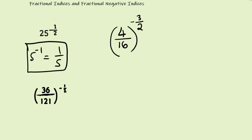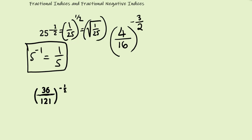Because we have fractional negative indices here, we're going to flip 25 over — so the reciprocal of 25 is 1 over 25 — and write it with a power of one half. Because we flipped the number over, we change the sign of the power to positive. Now we find the square root of 1 over 25: square root of 1 is 1, square root of 25 is 5, giving us 1 over 5 to the power of 1, which is just 1 over 5.